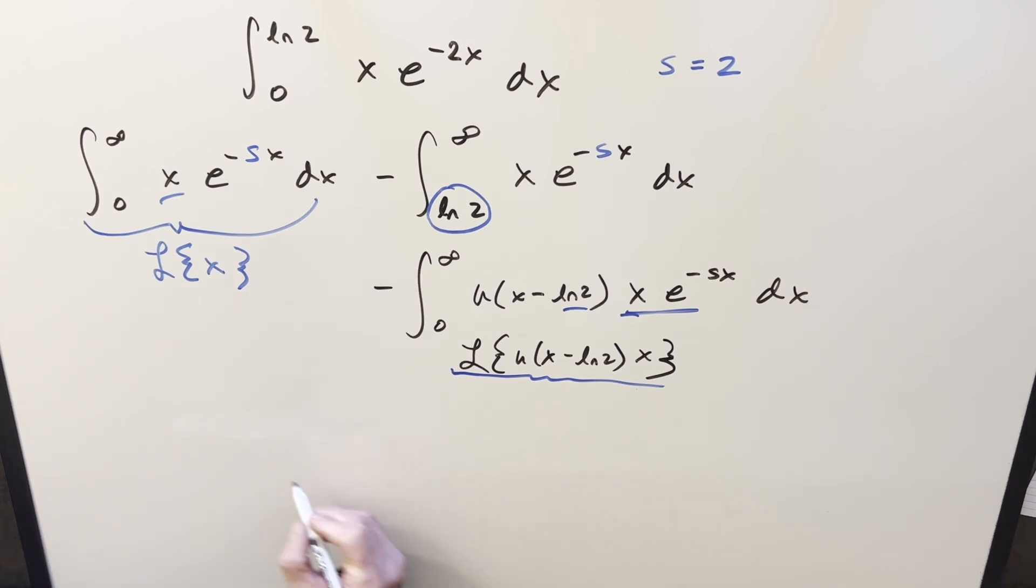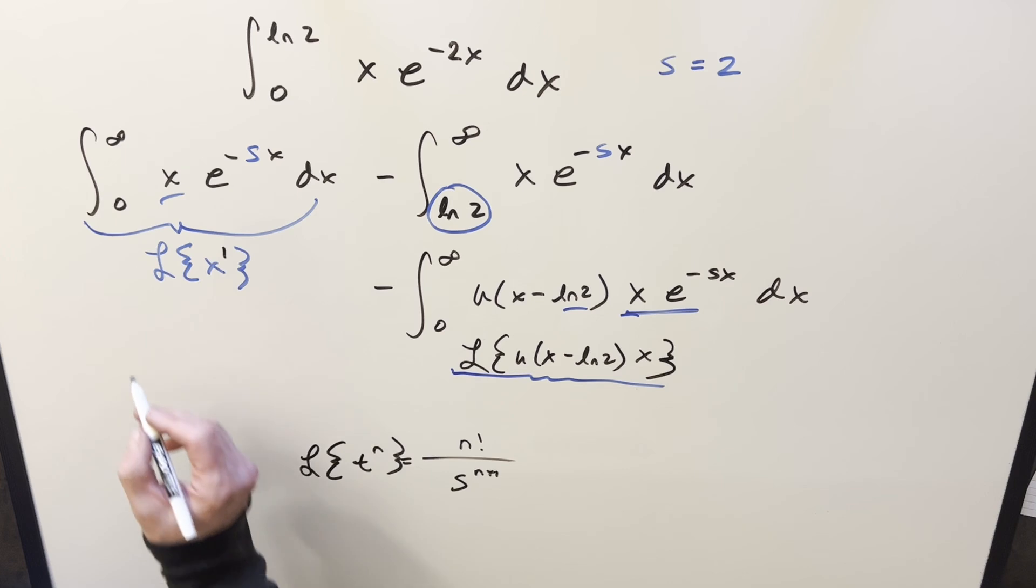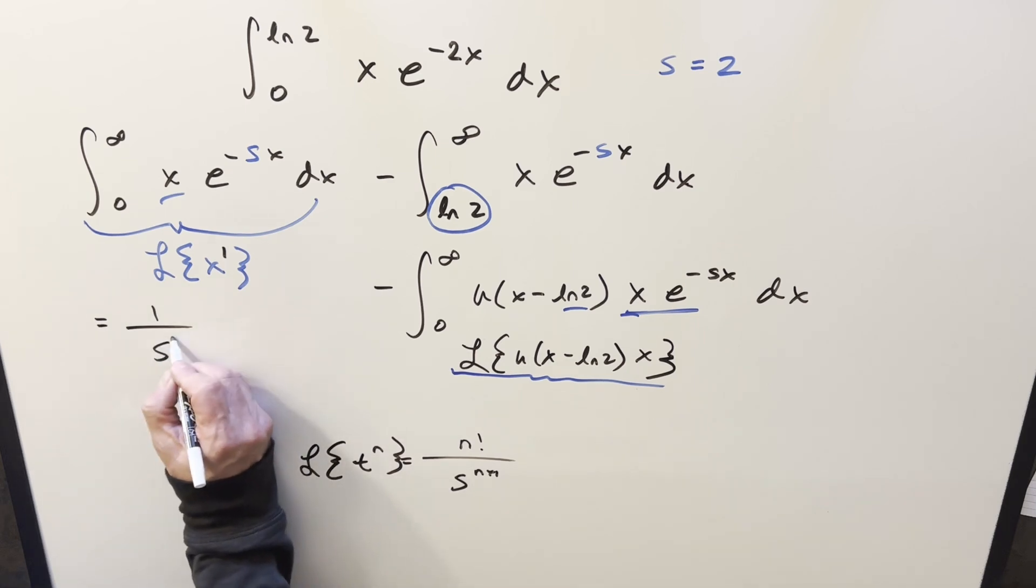This one's very common. We've got a formula for the Laplace transform of, say, t to the n. This is going to be equal to s to the n plus 1 over gamma function of n plus 1, or n factorial. Well, since our exponent is just a 1 here, let's use this formula like this. So this piece right here is going to be 1 factorial, or just 1, over s to the 1 plus 1, or s squared.